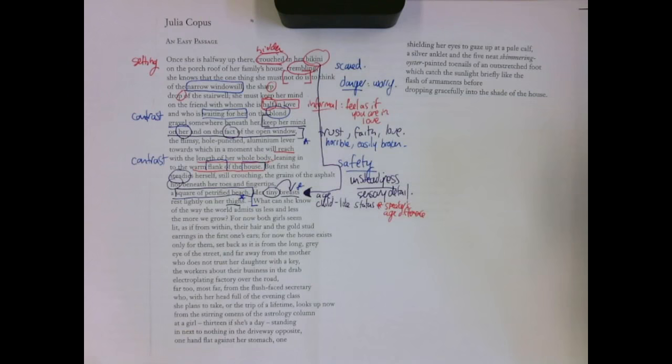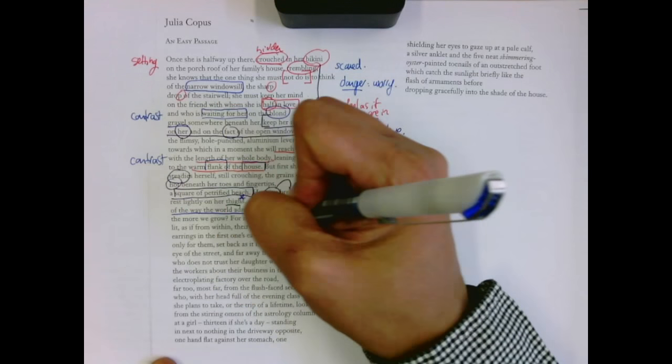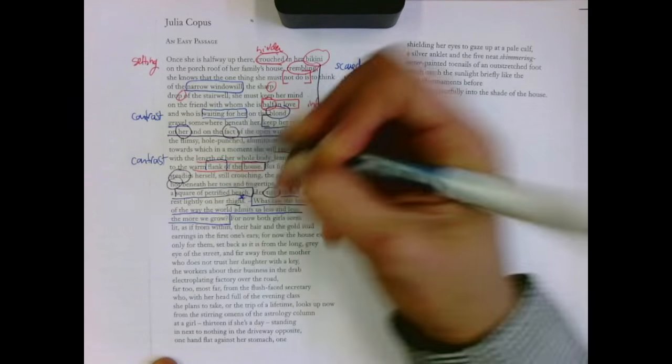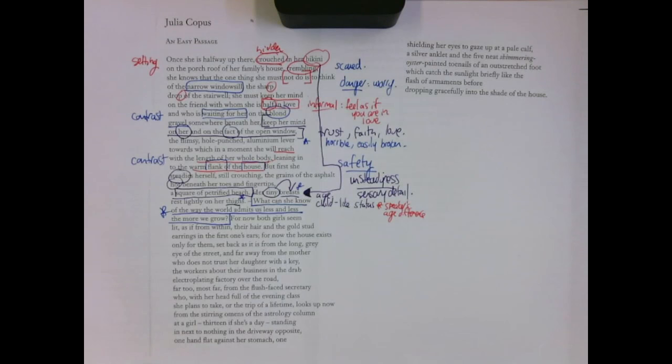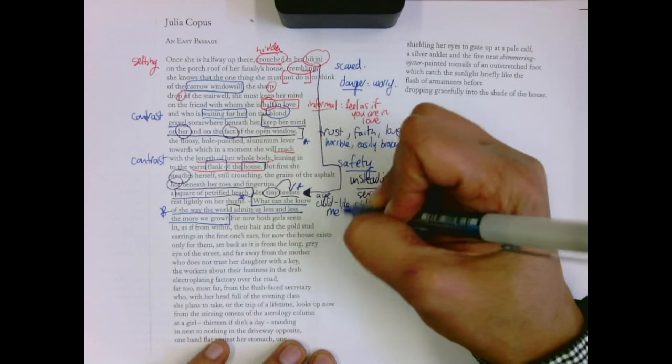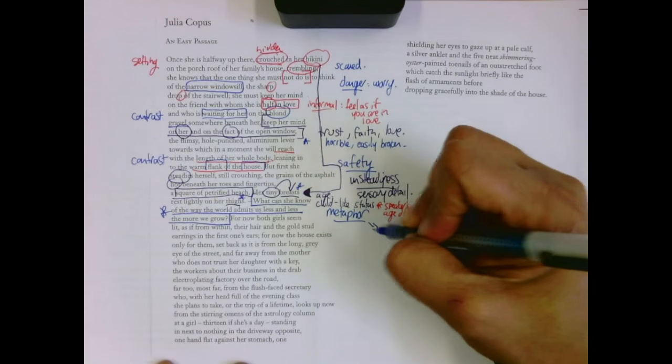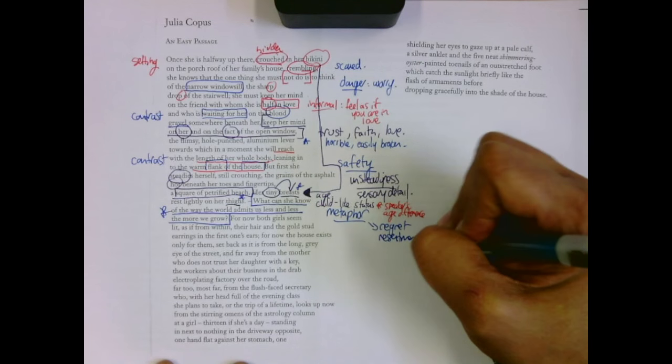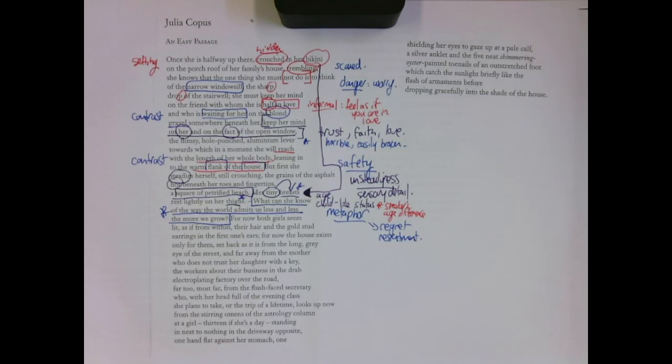And I think we see that break already in these details. But here comes the elderly speaker. What can she know of the way the world admits us less and less the more we grow? This line sticks out. It totally doesn't fit in with what we've seen up until this point. It's not a sensory detail. It's a comment. And she's almost watching herself. This memory is almost being played like a movie in front of her. And what she's saying is, that girl, what can she possibly know? The world admits us less and less the more we grow. You're struggling to get in this little window. But as you grow older and older, you get bigger and bigger. And this becomes a metaphor. You're going to get in less and less. And there's a real sense of regret, resentment. I'm looking at this moment with that. You know, Helen Dunmore's To My Nine-Year-Old Self is the perfect comparison, I would argue, with this poem.